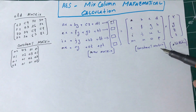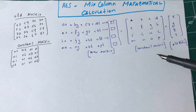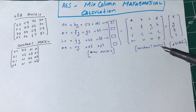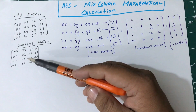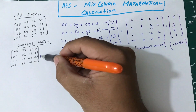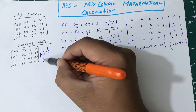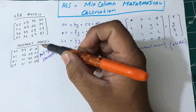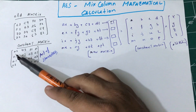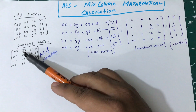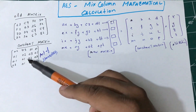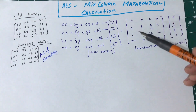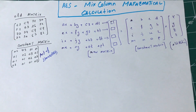This is a constant matrix, which is also part of the AES algorithm given in the standard. For encryption and decryption (inverse MixColumns) different constants are provided. This constant matrix is in hexadecimal values — each value is a byte (8 bits). The values are 02, 03, 01, 01 / 01, 02, 03, 01 / 01, 01, 02, 03, and so on. These values plug directly into the matrix.